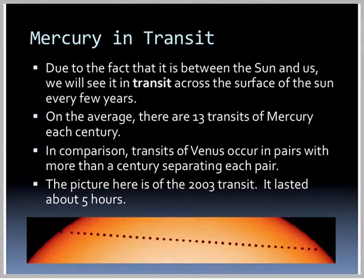Venus has transits that occur in pairs with more than a century separating each pair. This picture is of the 2003 transit, and it lasted five hours.